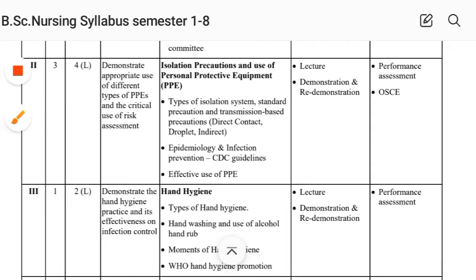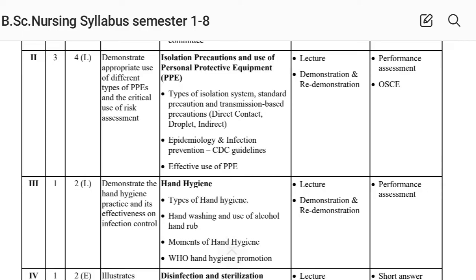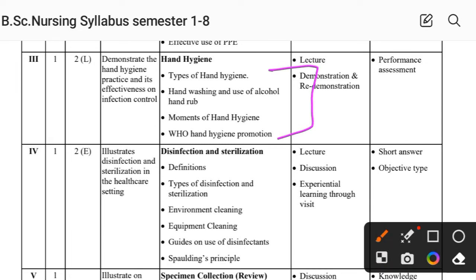Unit Second covers isolation precautions and use of personal protective equipment. Unit Third covers hand hygiene — types of hand hygiene, handwashing, use of alcohol hand rub, movement of hand hygiene, and hand hygiene promotion. Unit Fourth covers disinfection and sterilization: definition, types, environmental cleaning, equipment cleaning, guides on use of disinfectants, and sterilization principles.